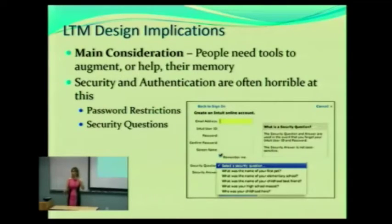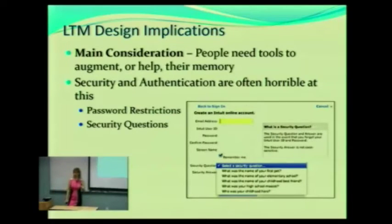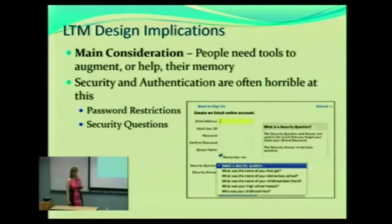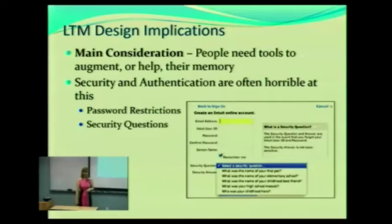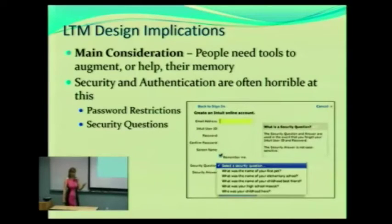What are some problems with the way the industry handles security and authentication? A website can ask for your username and password, and then say it's wrong, but it doesn't tell you what's wrong — so you can't figure out which is wrong, and you can't ask for help. You don't get any helpful feedback when you get something wrong trying to log in somewhere.